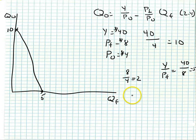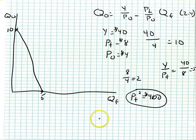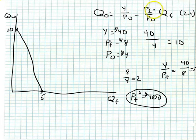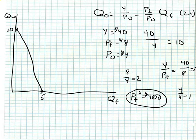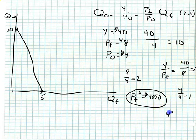Now let's see what happens if we decrease the price of food by $4. The new price of food, P_f2, equals $4. This does not change the y-intercept because the price of other goods has not changed. It will change the slope — the new slope would be 4 over 4, or 1. It also changes the maximum quantity of food: $40 over $4 now equals 10.